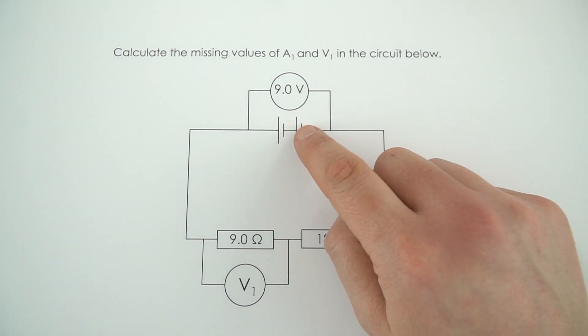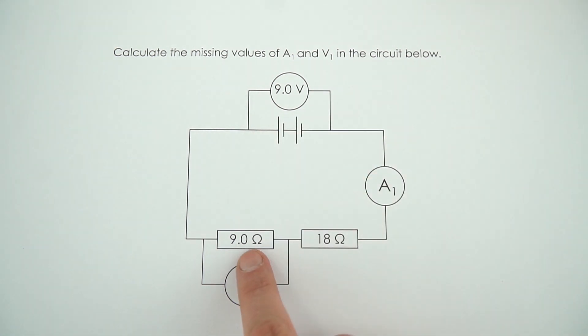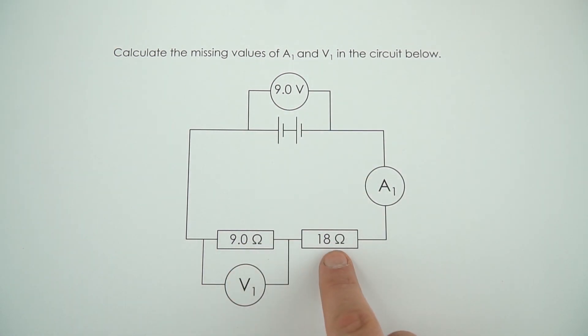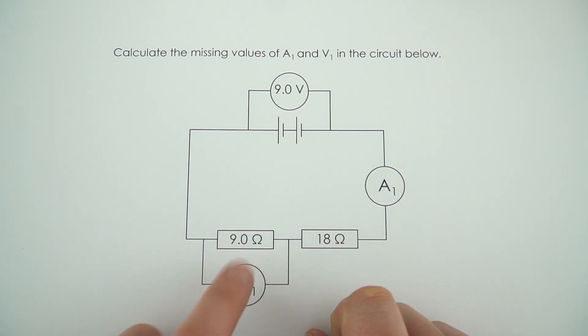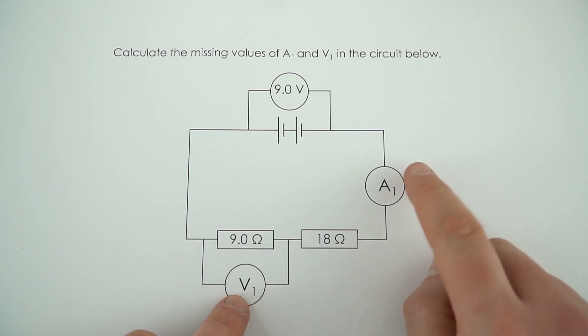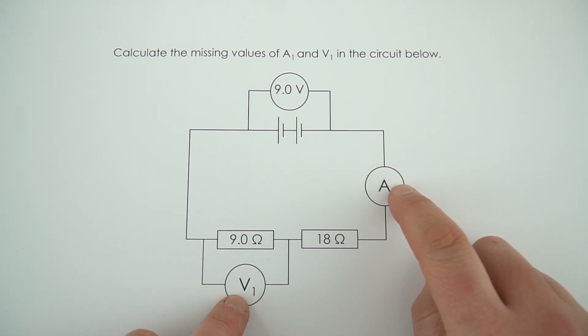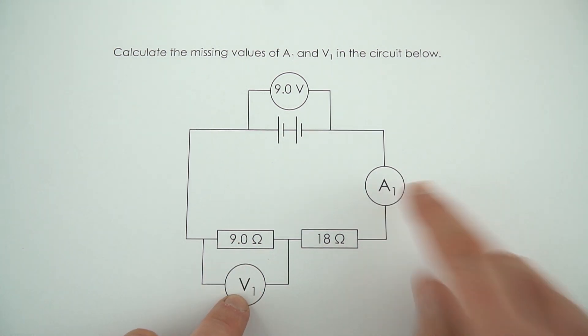In this example there's a 9 volt battery and two resistors — one is 9 ohms and one is 18 ohms. We need to work out the potential difference across one resistor and also the current that's flowing in the circuit.